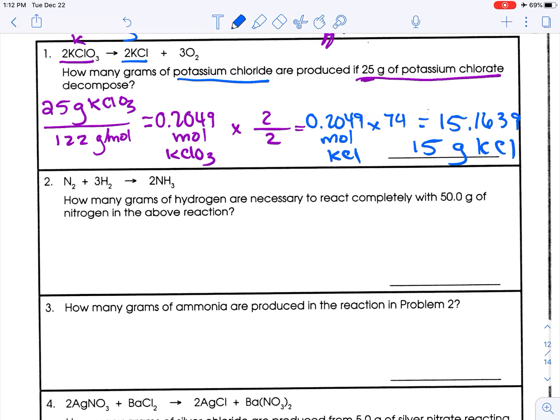Number 2. We have a balanced chemical reaction. We have a given quantity. So 50 grams. I'll stay consistent. 50 grams of nitrogen. This is our no. So we'll start there. And we seek hydrogen. This is our seek.